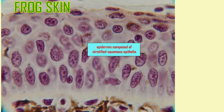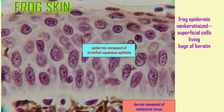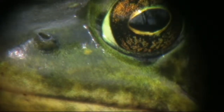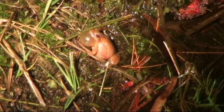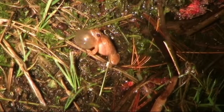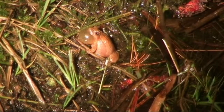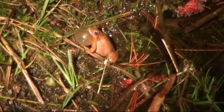In frogs, however, while there is keratin in the epidermis, the superficial layers are not keratinized. The cells are living, and this is important because frogs must breathe through their skin to varying degrees, so they rely on gas exchange, and their skin must remain moist.